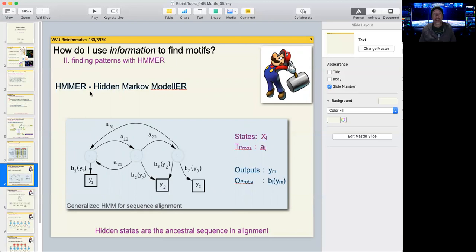So one of the more popular algorithms is called HMMER. It's H-M-M-E-R, short for hidden Markov modeler. And if you click on Mario here, you will be taken to the HMMER webpage.